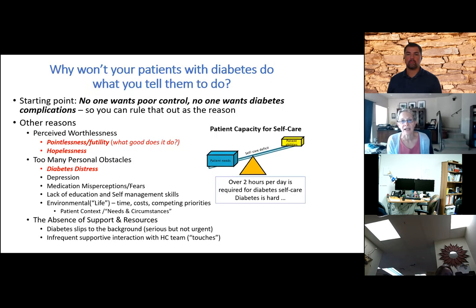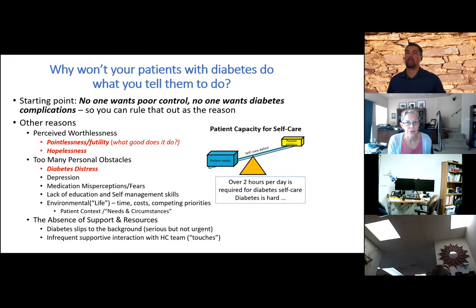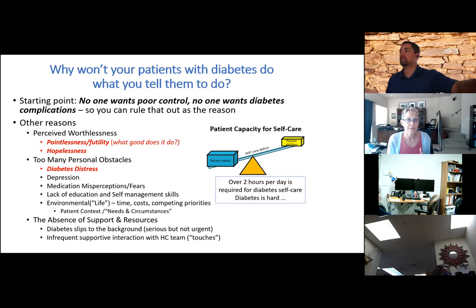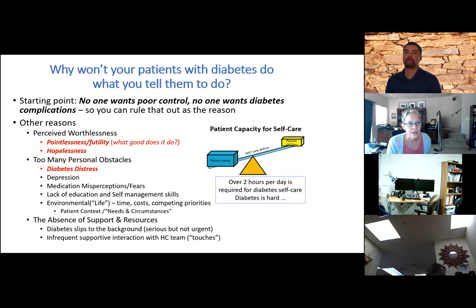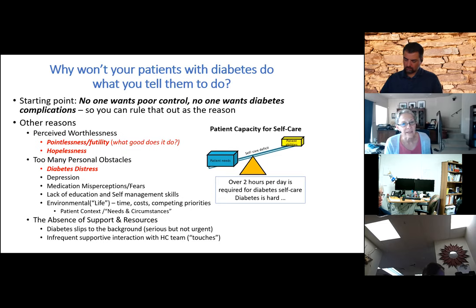Why won't your patients with diabetes do what you tell them to do? I can guarantee they are not wanting to have poor control or get diabetes complications. That's not ever going to be the reason. But there are other reasons: perceived worthlessness, pointlessness or futility — 'what good does it do?' — and hopelessness — 'bad things are going to happen to me no matter what, why even try?' We'll talk more about diabetes distress, which is different from depression and needs to be treated differently.